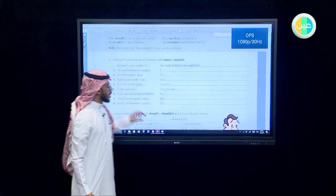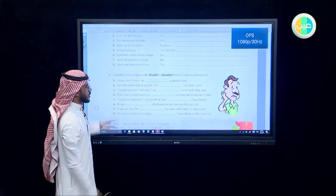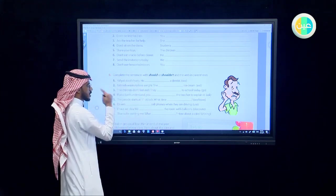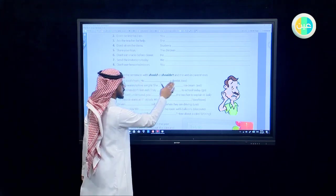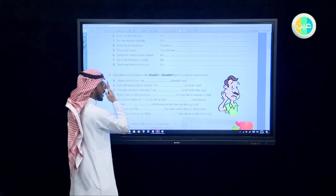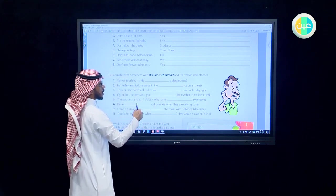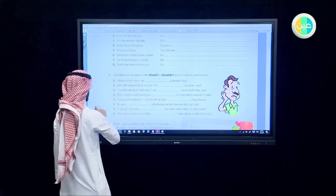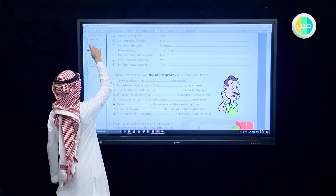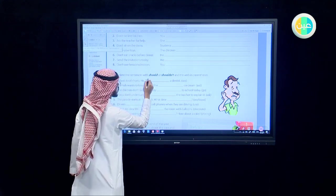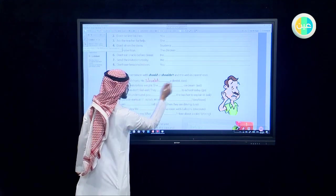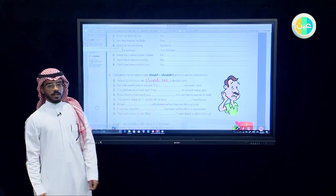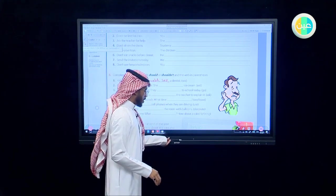How to write it. We have the verb between parentheses. We write before it should or shouldn't. For example: Yahya's tooth hurts. He should see a dentist. You should give advice that he goes to the dentist. He should, and the verb between parentheses we place it as it is, we don't change it. Try to do the other examples.